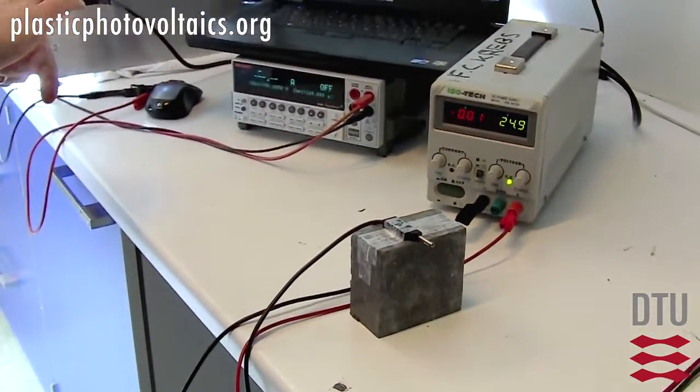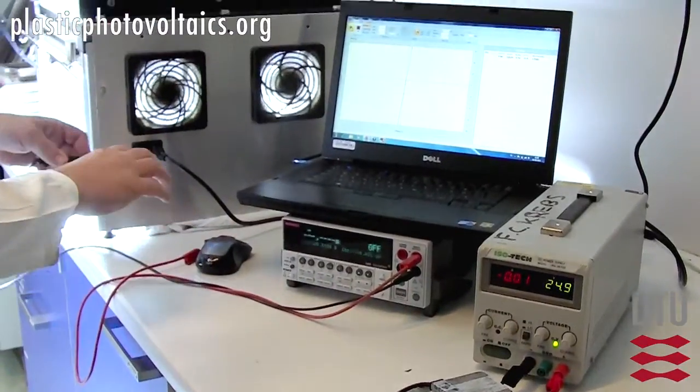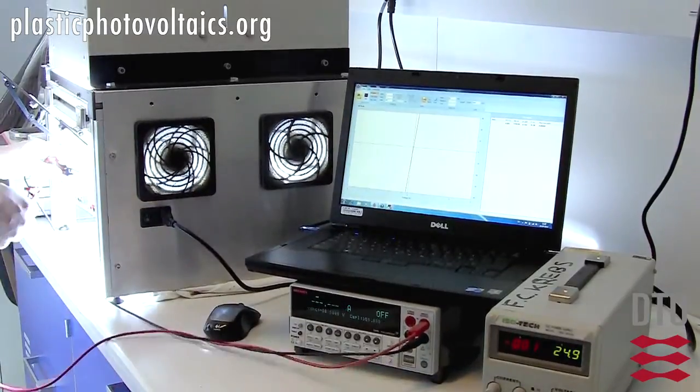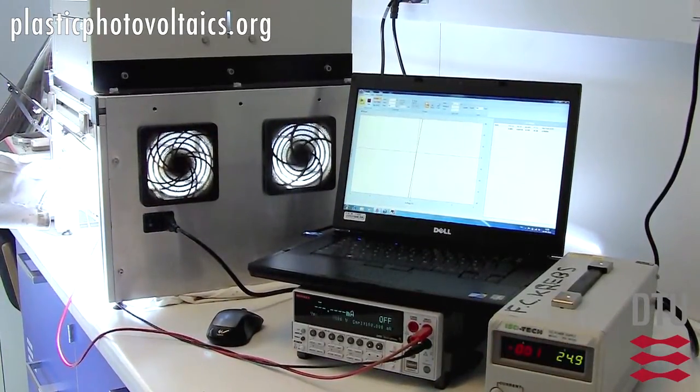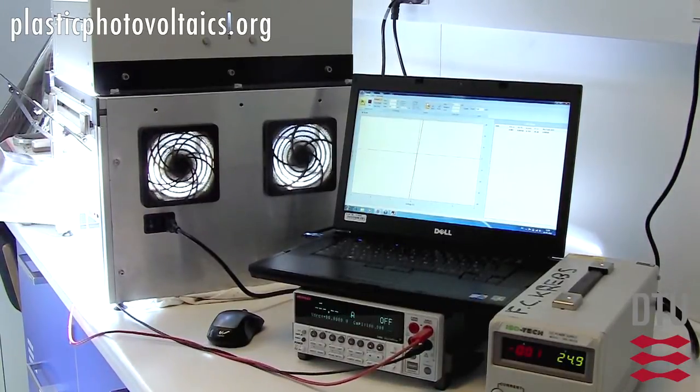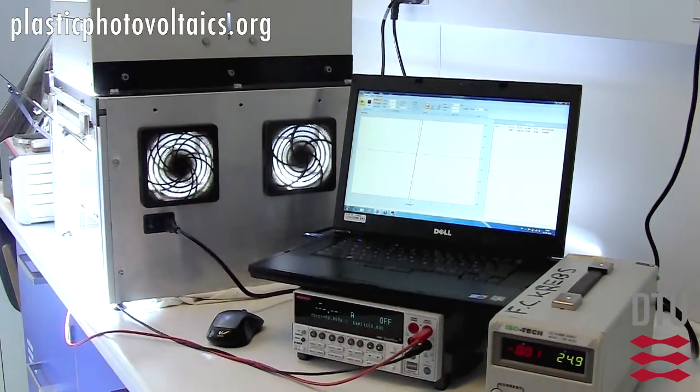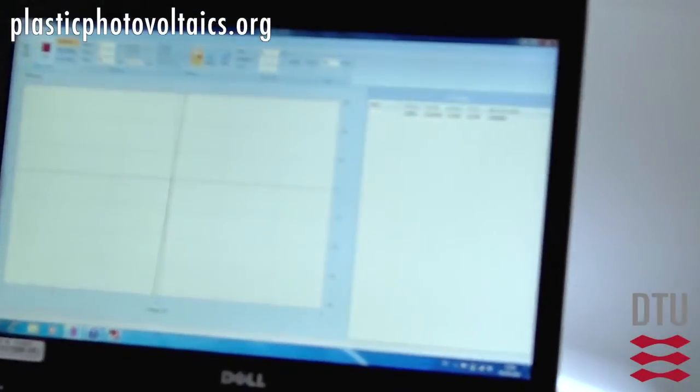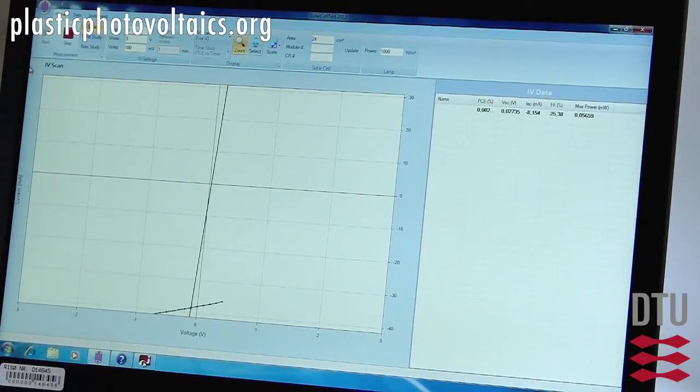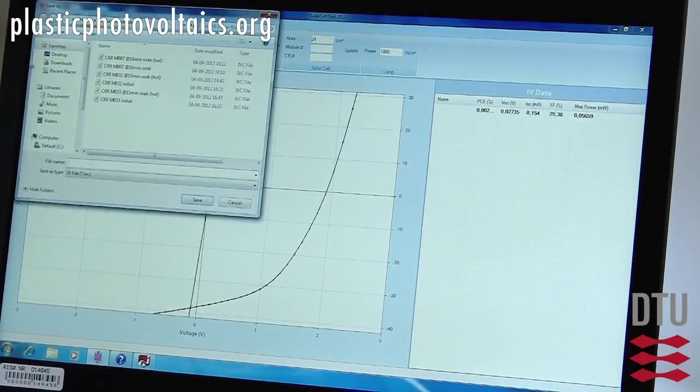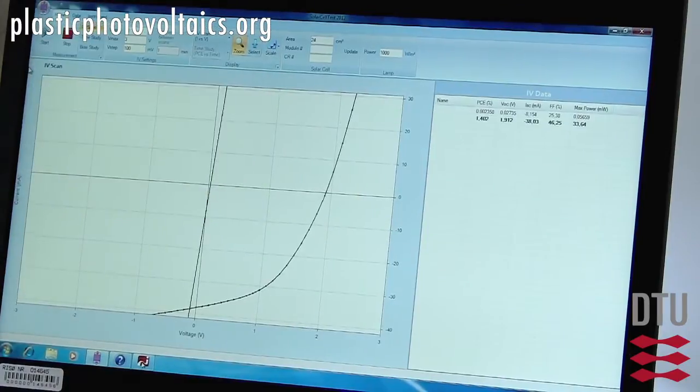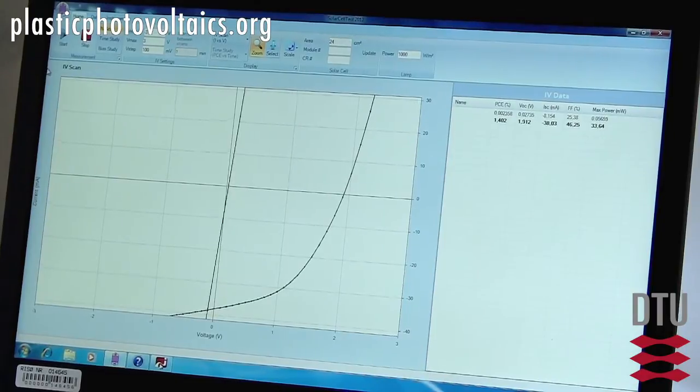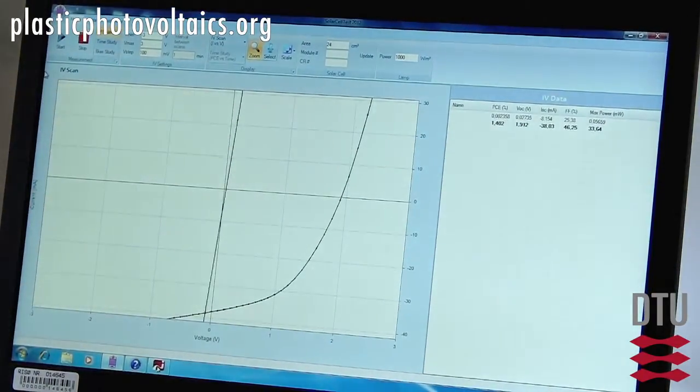Now we're going to take the source back to the sun and remeasure the IV curve. As can be seen here, we now have a solar cell of 24 square centimeters with an efficiency around 1.4 percent.